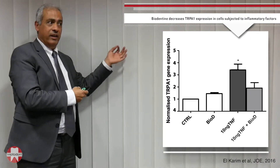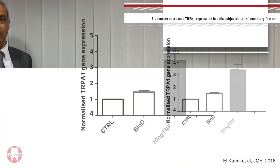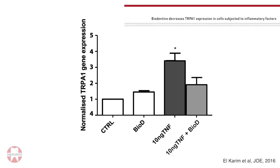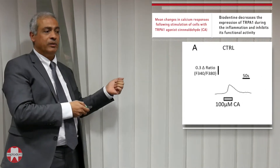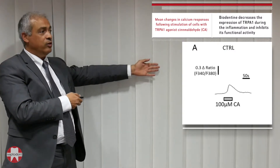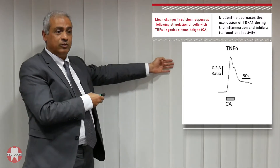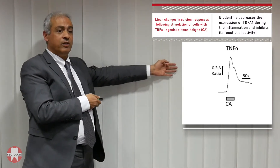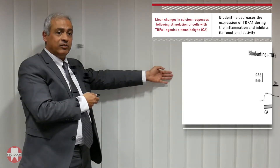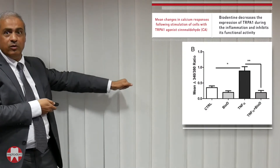When we add the biodentine extract to the inflamed cells, we notice a significant decrease in this receptor. This is very clear: biodentine applied to inflamed cells decreases receptor expression. We then investigated the functional activity using a protocol where cells are stimulated with cinnamaldehyde — a chemical that activates this receptor type — and we measured the influx of calcium ions.